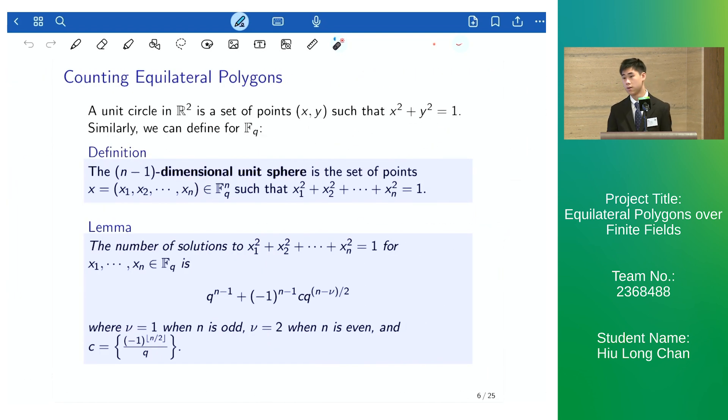A unit circle in the real plane is a set of points (x, y) such that x² + y² = 1. Similarly, we can define for F_q the (n-1)-dimensional unit sphere in the same way.